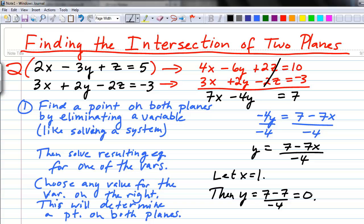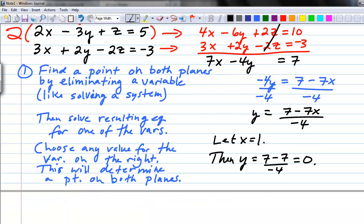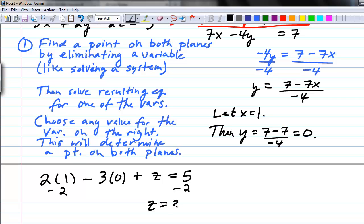This will determine a point on both planes. If we let x equal 1, then y will equal 7 minus 7 over negative 4, or 0. So now we have an x value and a y value. We need to find the corresponding z value. For that, we're going to go back to one of the original equations, probably easiest to use the first equation. If we put the x value of 1 in, we have 2 times 1 minus 3 times the y value of 0 plus z equals 5. We can subtract this 2 from both sides, and we get z equals 3.